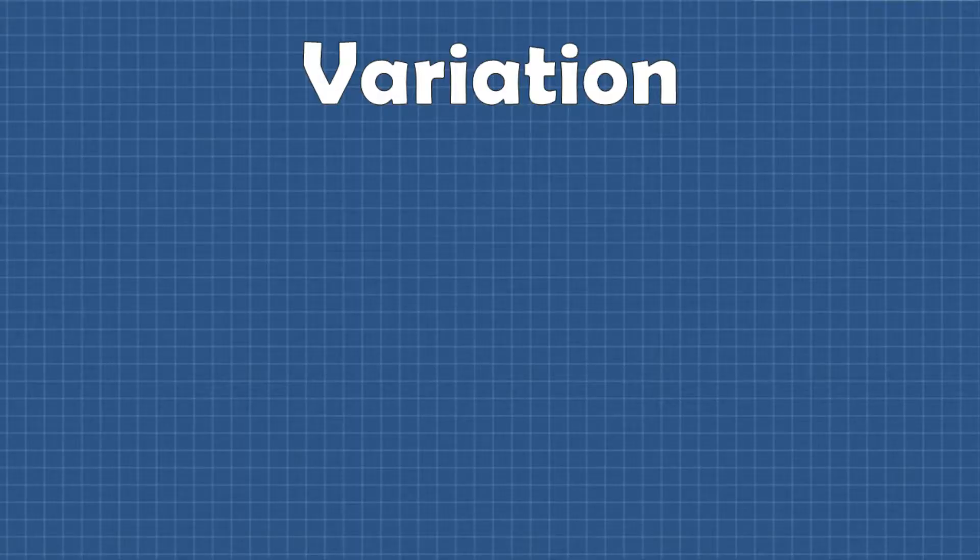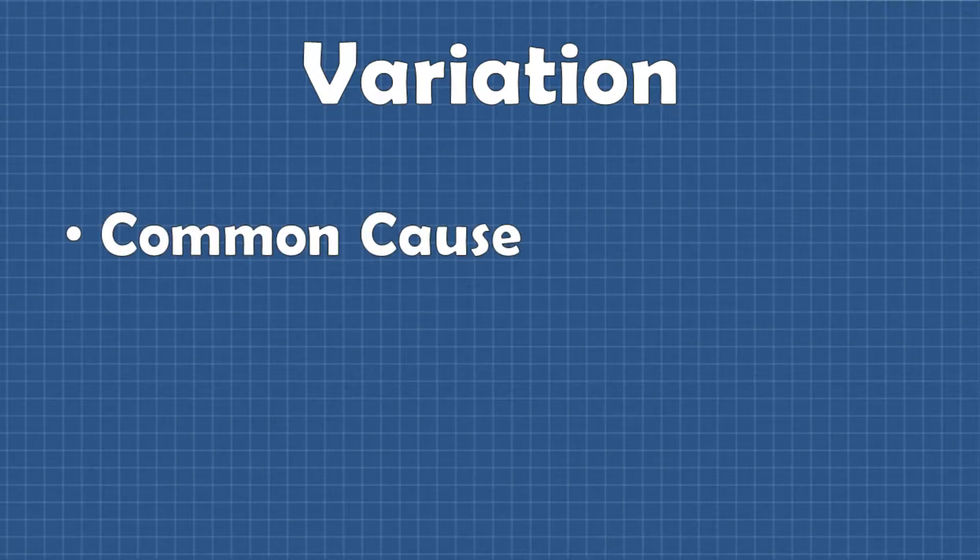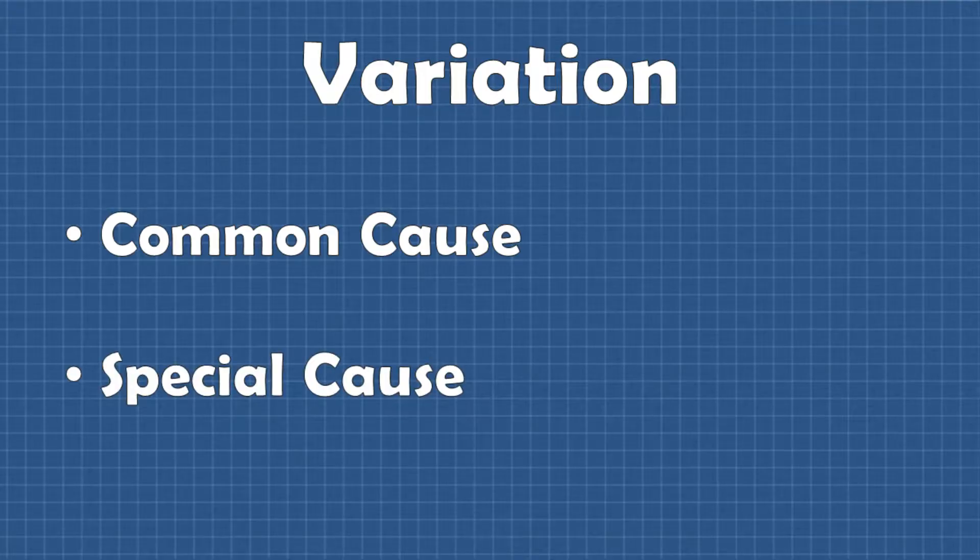So the first piece of understanding control charts is understanding variation. There are two types of variation: common cause variation and special cause variation. To help us understand these concepts let's use an example.